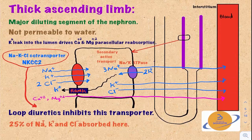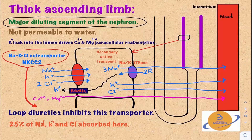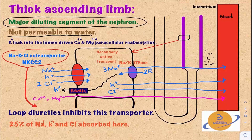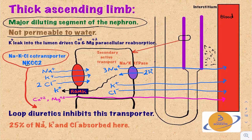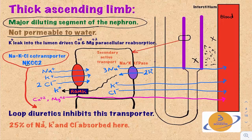The thick ascending limb is the major diluting segment of the nephron because solutes move from the tubular lumen into the interstitium while it remains impermeable to water, making the luminal fluid more dilute. It's also responsible for creating the high solute concentration in the medullary interstitium — the so-called salty medulla. By the time the filtrate reaches this segment, its osmolarity equals that of the interstitium, so any further solute transport must be active.